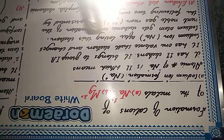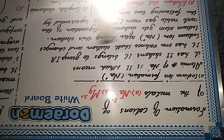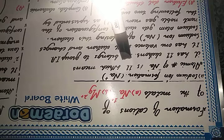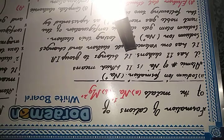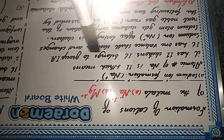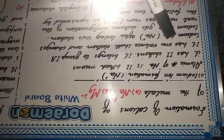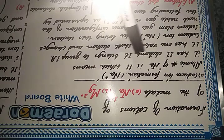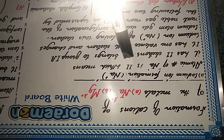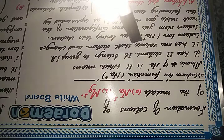The atomic number of sodium is 11. It is in the first group of the periodic table, which is on the left-hand side. Being in group 1 means it has 11 electrons.